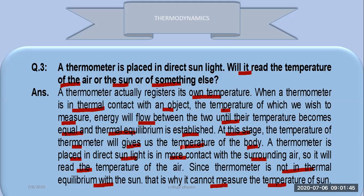To measure the temperature of any object, the most important thing is that the thermometer must be in thermal equilibrium with that body. When the thermometer is placed in the Sun, the surrounding air interacts with it, and equilibrium is established with the air — which is why we measure the temperature of the air, not of the Sun.